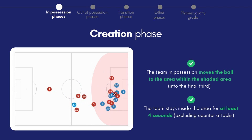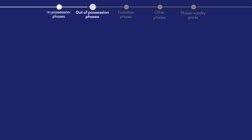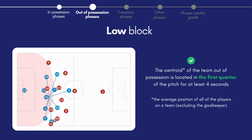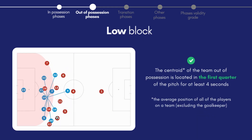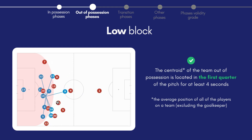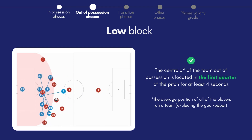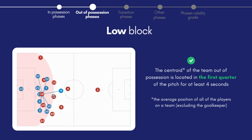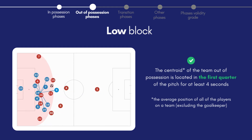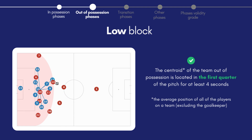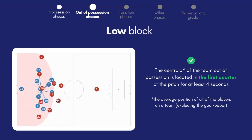The first of our out-of-possession phases is the low block, when the team's priority is to limit the space in behind for the opposition to exploit. In this phase the average position of the players must be within the first quarter of the pitch for four seconds.